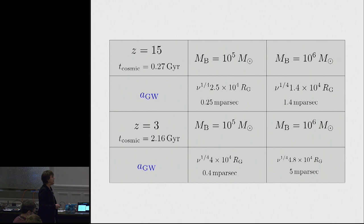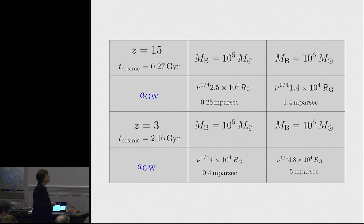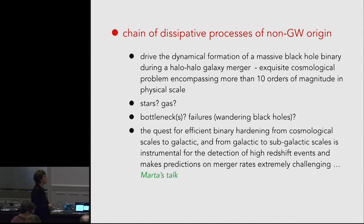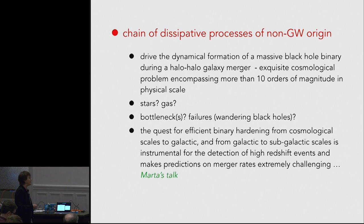The critical distance is weakly dependent on mass and is of the order of a milliparsec. If we want to detect a coalescence event at redshift 15 when the universe is only three hundred million years old, we really have to bring these two black holes to this tiny scale. The condition is less critical at redshift 3 because we have more time. It is clear we need a chain of dissipative processes of non-gravitational-wave origin to drive the formation of these massive black hole binaries, and this is associated with the clustering of galaxy halos.